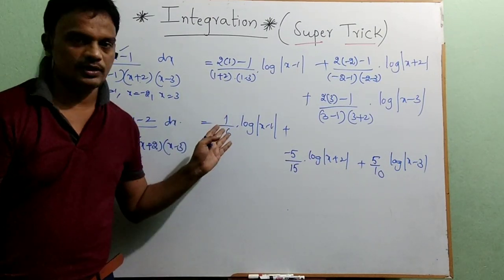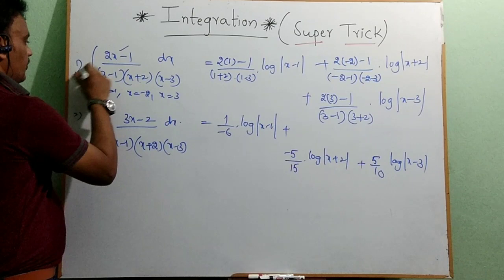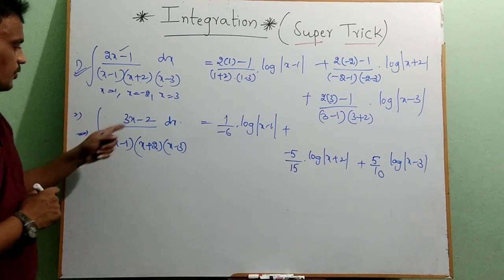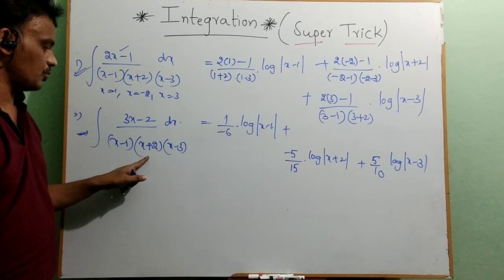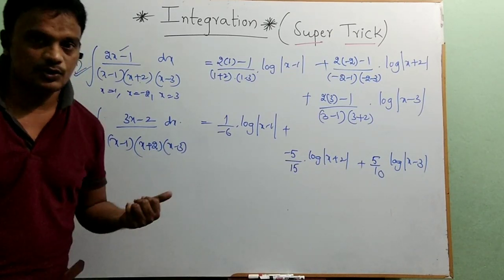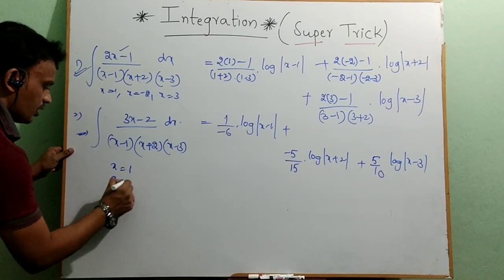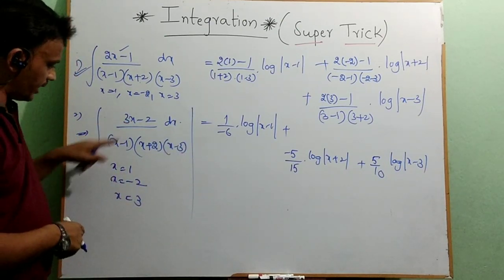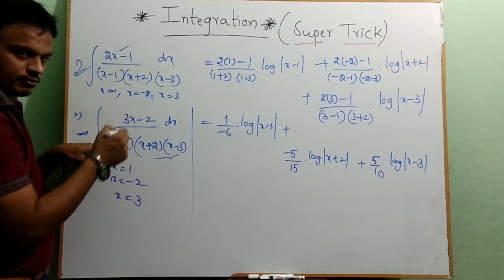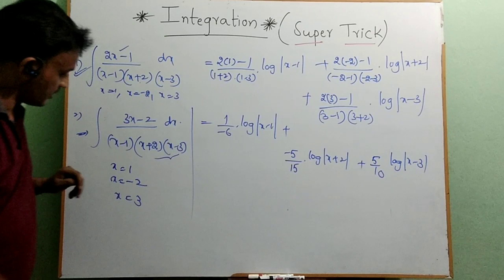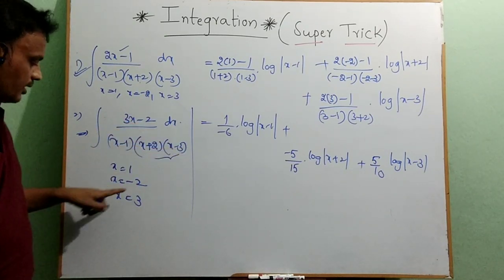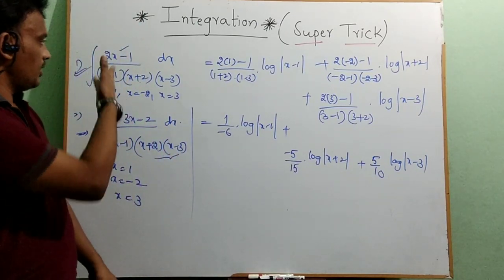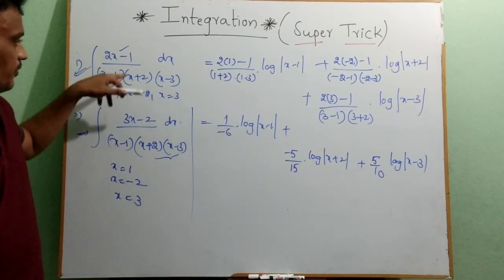That gives the complete integration of the partial fraction. Students, make a note. Now try this problem: integral of (3x−2)/((x−1)(x+2)(x−3)) dx. Substitute x = 1, x = −2, and x = 3 in turn into the numerator. At x = 1, substitute only into the numerator and the other two factors. This is a very easy method for integration by partial fractions.